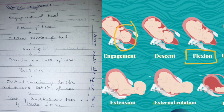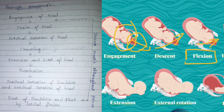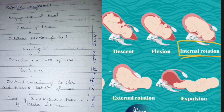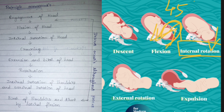Next is flexion of the head. Flexion of the head means the baby's head moves forward slightly — because as the baby goes downward, the passage gets smaller, so the baby's head bends forward. That is known as flexion of the head. Next is internal rotation: internally the baby rotates inside the womb before coming out, rotating 45 degrees for safe delivery.